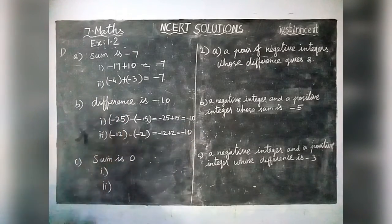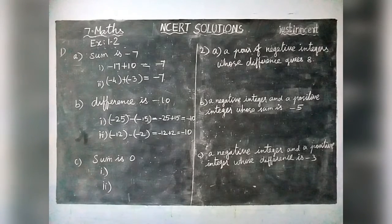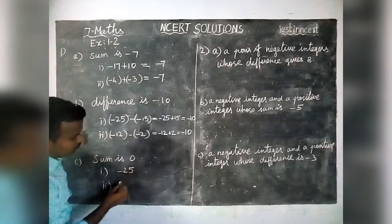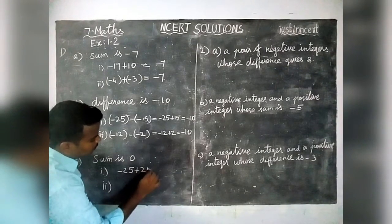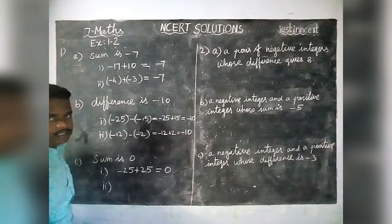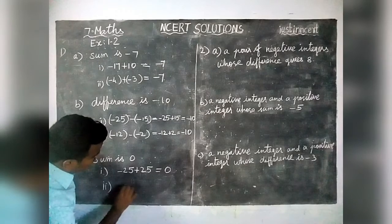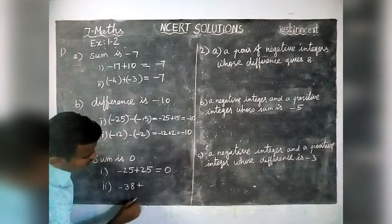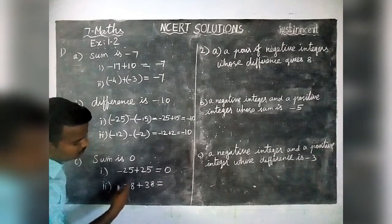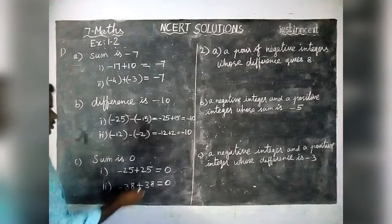Now, option C: when we add two numbers we should get a sum equal to 0. We take minus 25 plus 25 — one negative, one positive. When we add these two numbers we get sum equal to 0. Similarly, minus 38 plus 38 equals 0, since both have different signs.